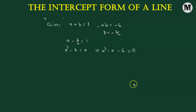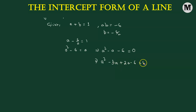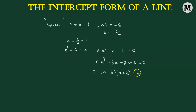This is a standard quadratic equation. We can factorize by splitting the middle term to get A squared minus three A plus two A minus six equals zero, which gives us A minus three multiplied by A plus two equals zero. Solving for A, we get A equals three and A equals negative two.